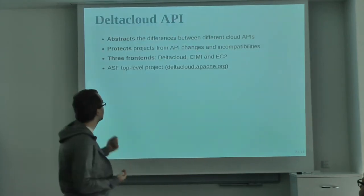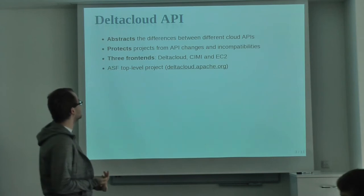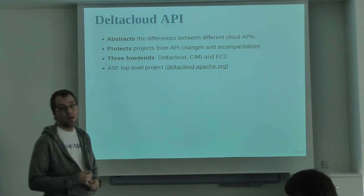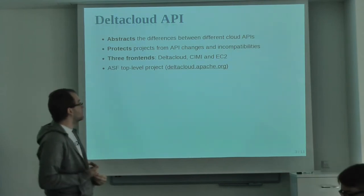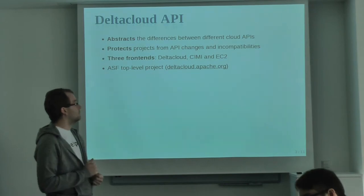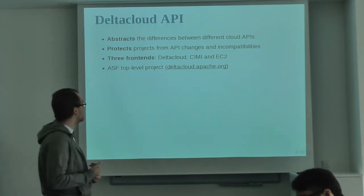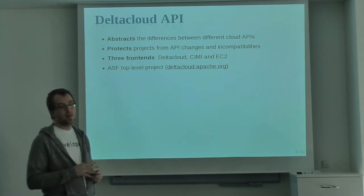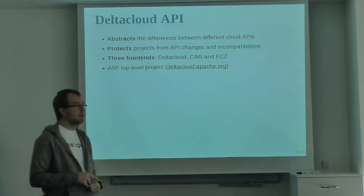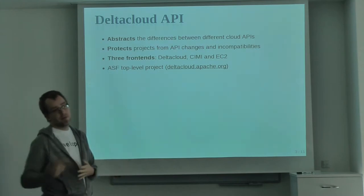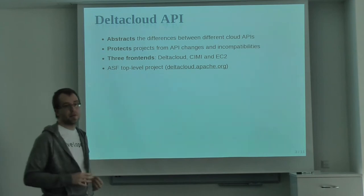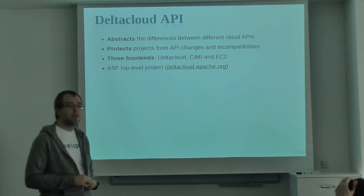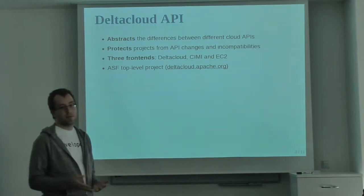There is also the vendor lock-in thing that prevents you from switching from one provider to another. So with the Delta Cloud API, you can hopefully abstract all these differences between cloud providers. It protects you from API changes and from incompatibilities, which is very nice. For example, the switch from RHEV-M 3.0 to 3.1 was transparent for you because we fixed all the small incompatibilities in the RHEV-M driver.